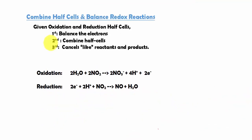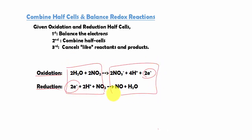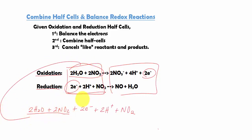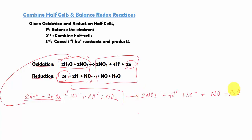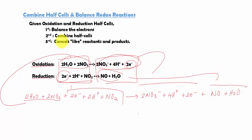Let's try another problem. The half-cells are again given in terms of oxidation and reduction, making it easier. Balancing the electrons: we have 2 electrons in oxidation and 2 electrons in reduction — they already cancel. We then combine the half-cells by adding all reactants together and all products together and rewriting as a complete reaction. The 2 electrons in the reactants cancel with the 2 electrons in the products.